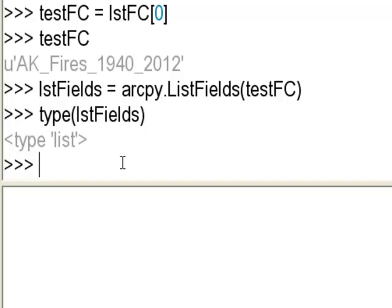Field objects contain different properties such as the field name, the field type, and whether the field is editable. Typically once you have your list of field objects, you would loop through each field object and print out the field name, field type, and whether it is editable.